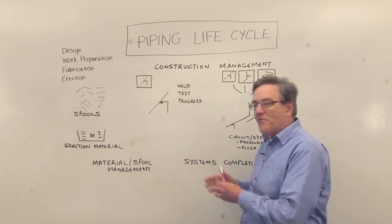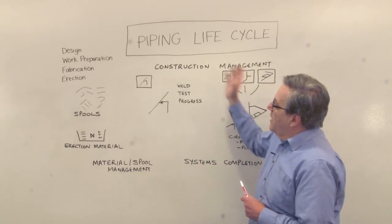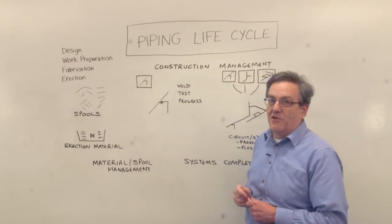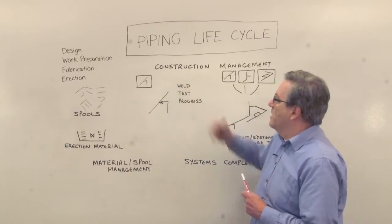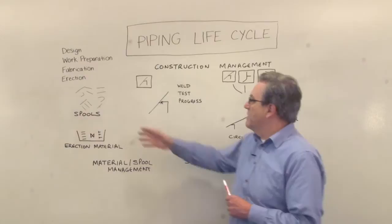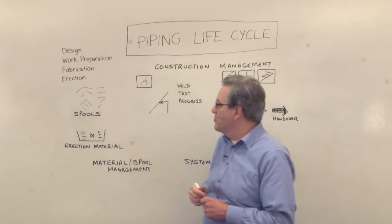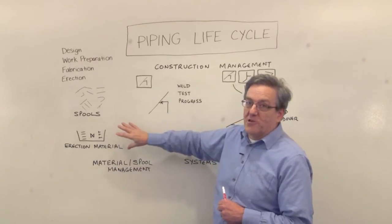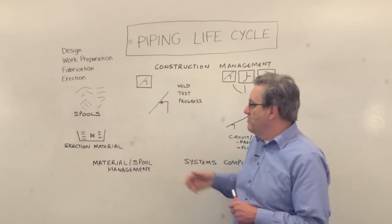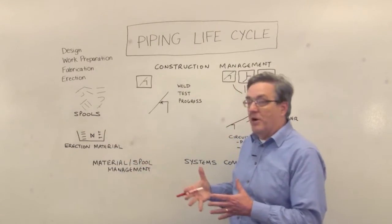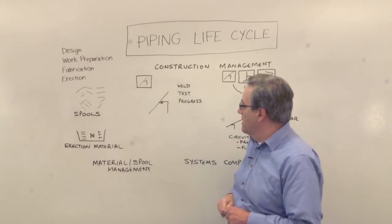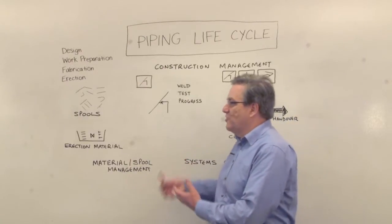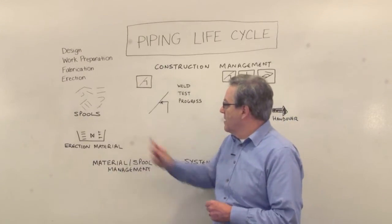We've seen how in the pipe fabrication shop the instructions for fabrication have been transmitted. So now we've reached the final stage: we are going to construct this piping, this pipeline. What we're starting with is a whole bunch of spools that have been fabricated in the shop and delivered to site, and a whole bunch of material required for erection — things like gaskets, bolts, and perhaps valves that are not part of any spool but were in the original isometric. Material management and procurement, ensuring that material is available on time, is a key thing.